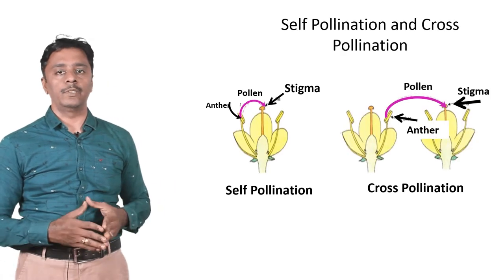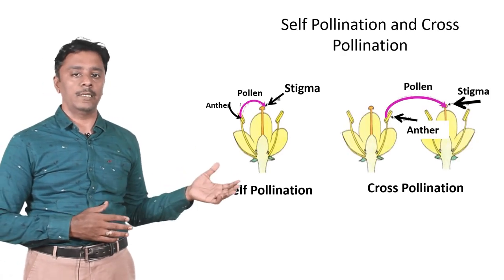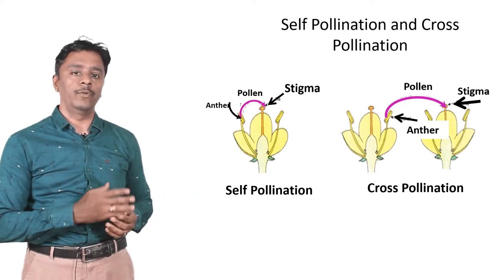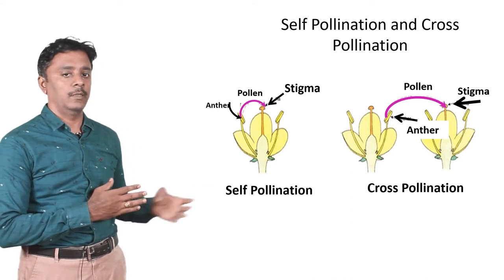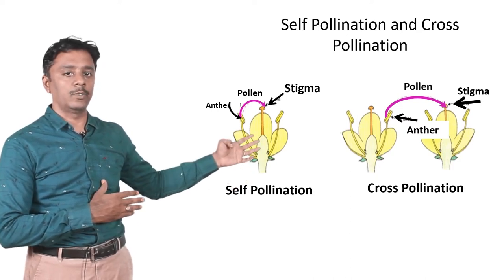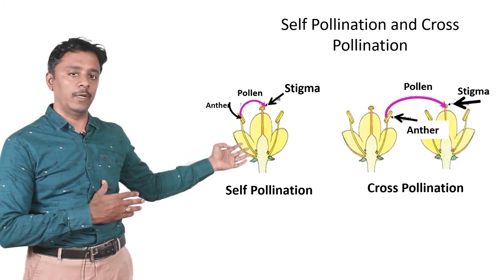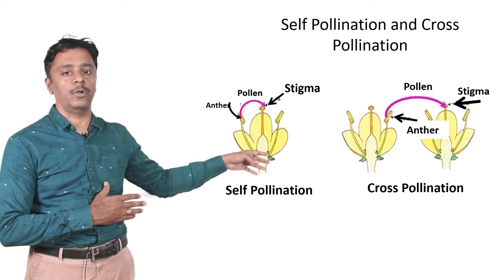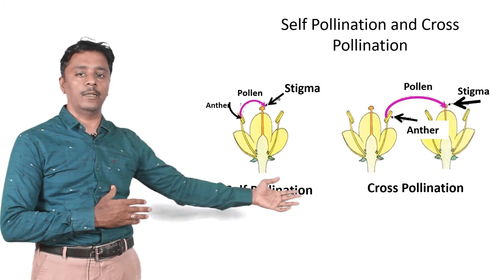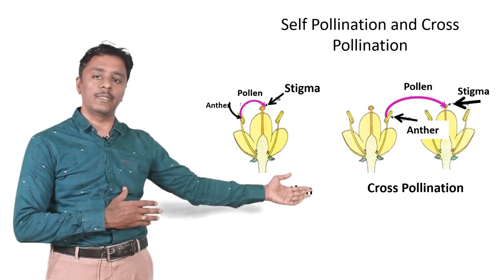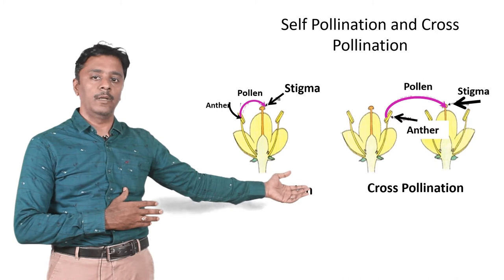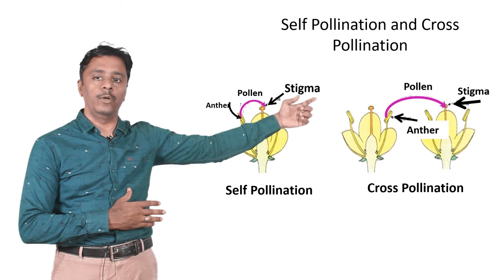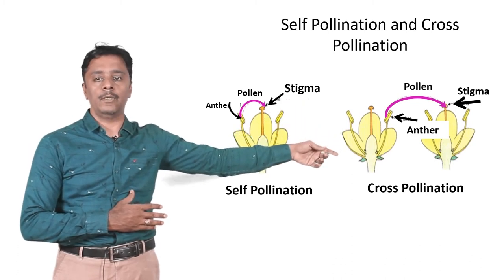There are two types of pollination: self-pollination and cross-pollination. In self-pollination, the pollen grains from the anther of the same flower are transferred to the stigma of the same flower. In cross-pollination, there are two different flowers of the same plant or the same species of a different plant, and the pollen grain goes from the anther to the stigma of another flower.